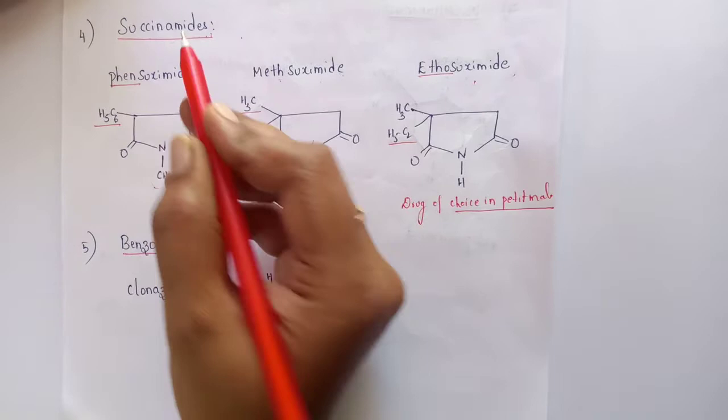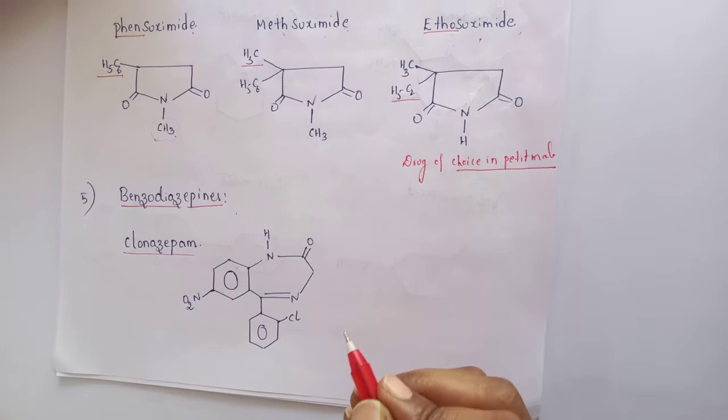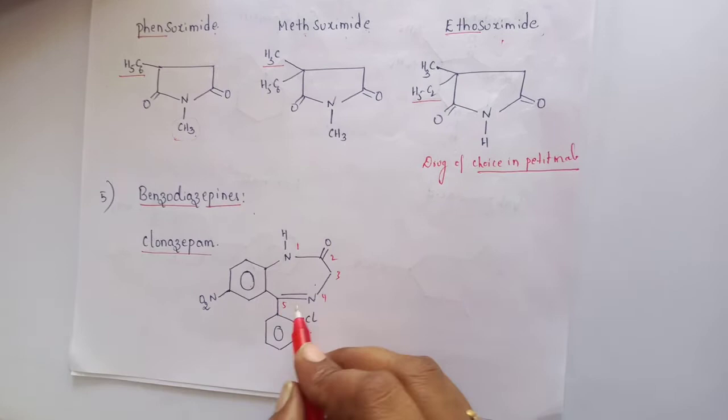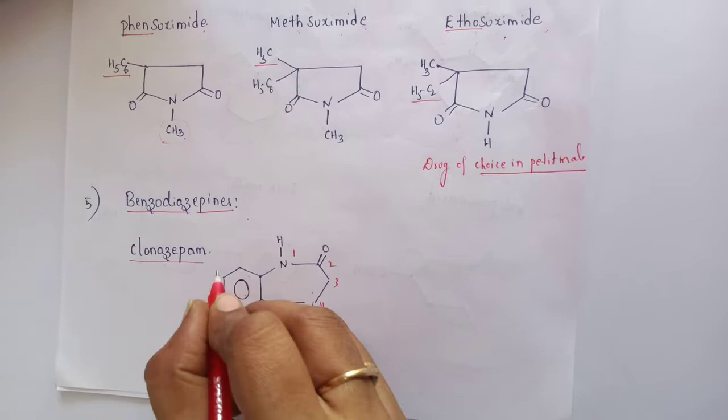The 5th class of drugs is benzodiazepines. The example of drug is clonazepam. Clonazepam consists of a benzene and diazepine ring. At the 5th position it consists of a chlorobenzene substituent, and at the 7th position it consists of a nitro group. This is the structure of clonazepam.